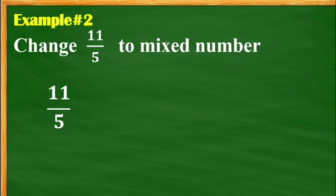Next, sample number 2. We're going to change this one into a mixed number. How many 5s can go into 11? We have 2. What would be the remainder? The remainder is 1. Then copy the denominator. So the final answer is 2 and 1 fifth.